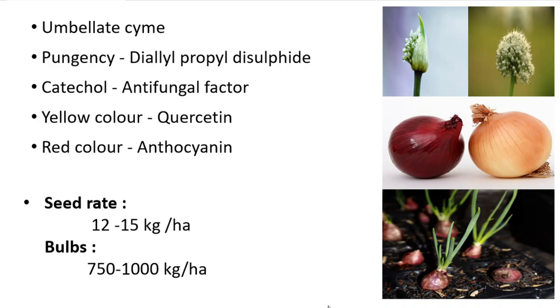Now let us see about the seed rate. When seeds are used, 12 to 15 kg of seeds per hectare is required. When bulbs are used, 750 to 1000 kg of bulbs per hectare is required.